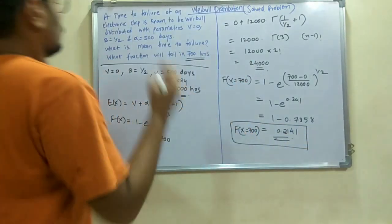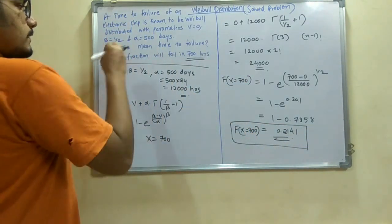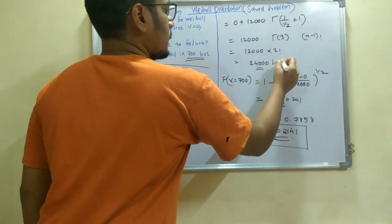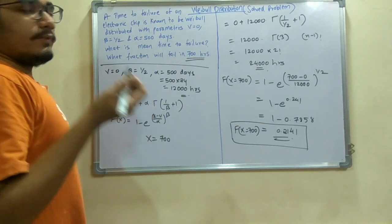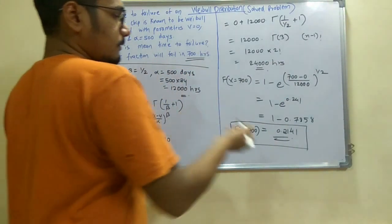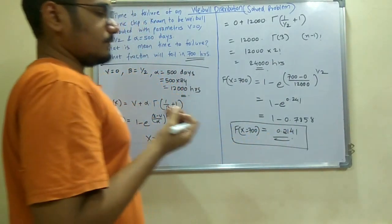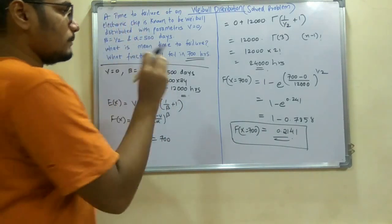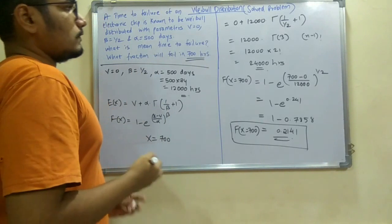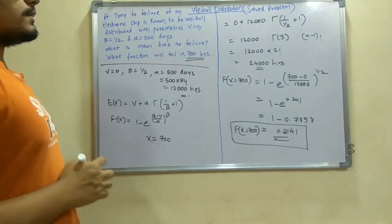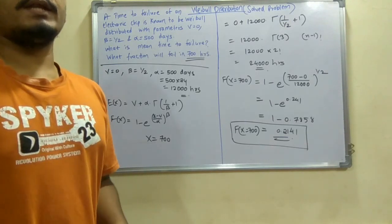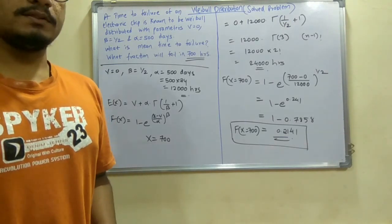So to the question, what is the mean time to failure? The mean time to failure would be 24,000 hours, and what fraction will fail in next 700 hours would be 0.2141 of the electronic chips. So this was a small problem based on the Weibull distribution. Hope you enjoyed this video and found it helpful. Please subscribe to my channel. Thanks for watching this video.